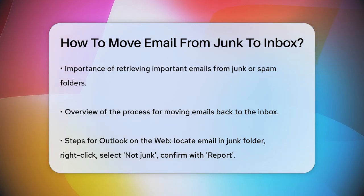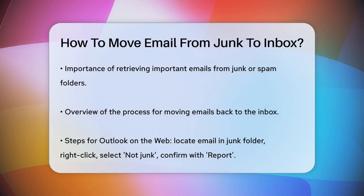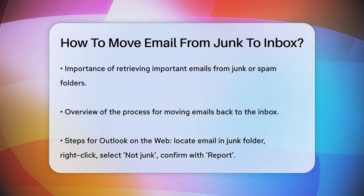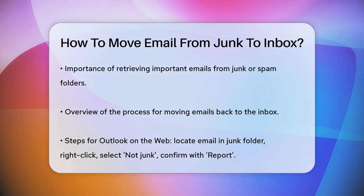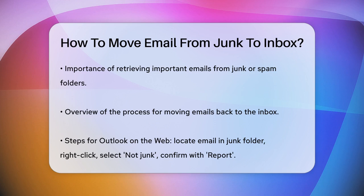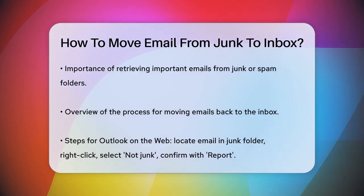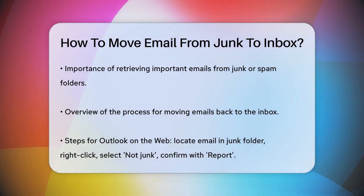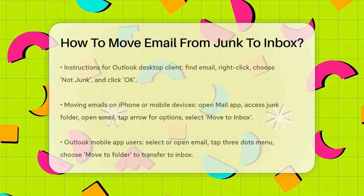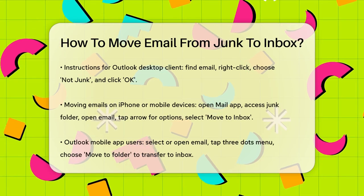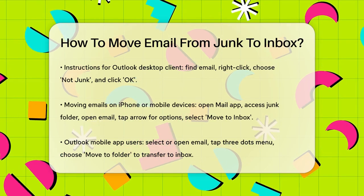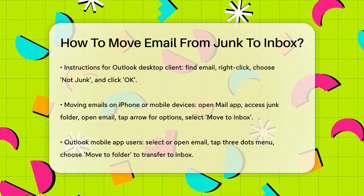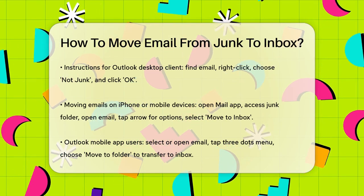If you're using Outlook, whether it's the web version or the desktop client, the process is relatively straightforward. For Outlook on the web, go to your junk email folder and find the message that was incorrectly flagged. Right-click on the email and select Not Junk under the Report option. This will move the email from the junk folder to your inbox. You'll also be asked if you want to report the mail as Not Junk, so click Report to confirm.